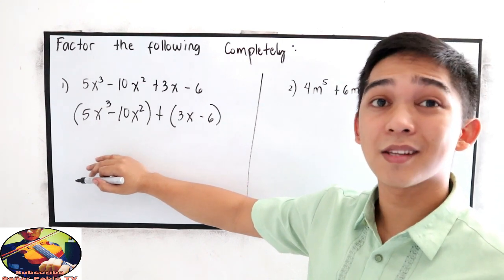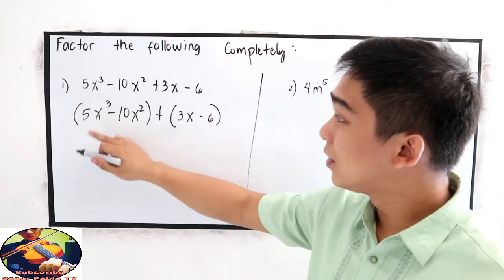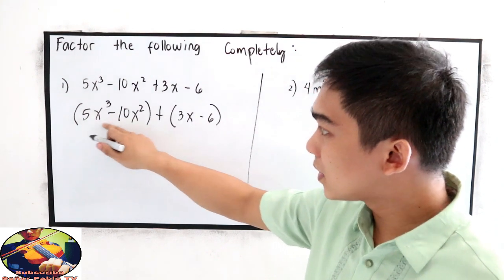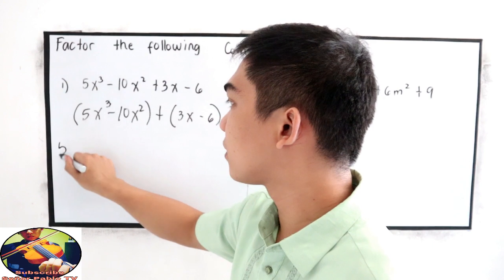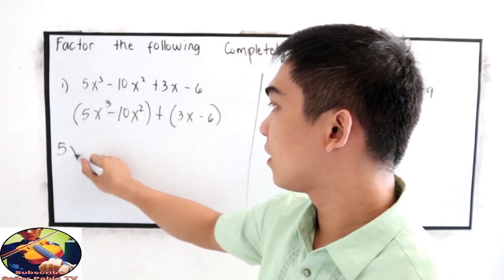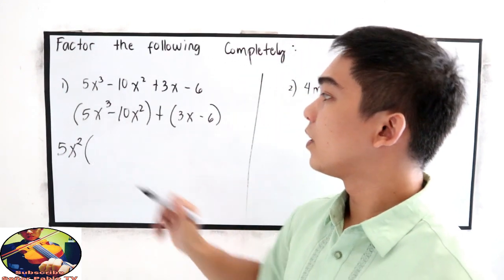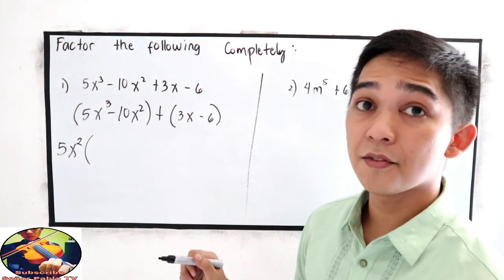For this expression, our GCF is 5 and x squared. To get the other factors, let us divide. 5x cubed divided by 5x squared.